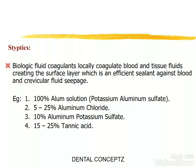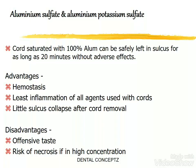Styptics are biologic fluid coagulants which locally coagulate blood and tissue fluids, creating a surface layer that acts as an efficient sealant against blood and crevicular fluid seepage. Examples are 100% alum solution, 5–25% aluminum chloride, 10% aluminum potassium sulfate, and 15–25% tannic acid. The cord saturated with 100% alum can be safely left in the sulcus for up to 20 minutes without adverse effects. Advantages include hemostasis, least inflammation among all agents used with cords, and little sulcus collapse after cord removal.